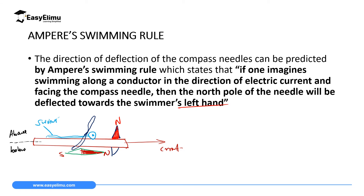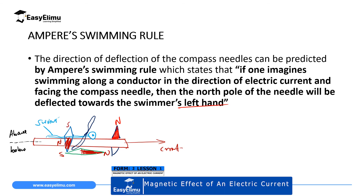Therefore, it means if you have a compass needle on top of the swimmer — the one below faces the left hand — if it's on top of the swimmer, from what we saw in the Oersted experiment, then in this case the compass needle is going to face the right hand side. If it's above, it's going to face the right hand side like this. This is when we have the compass needle above the swimmer.